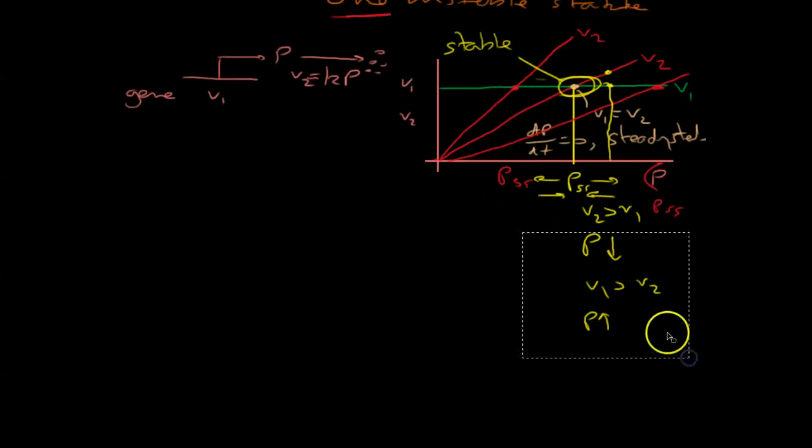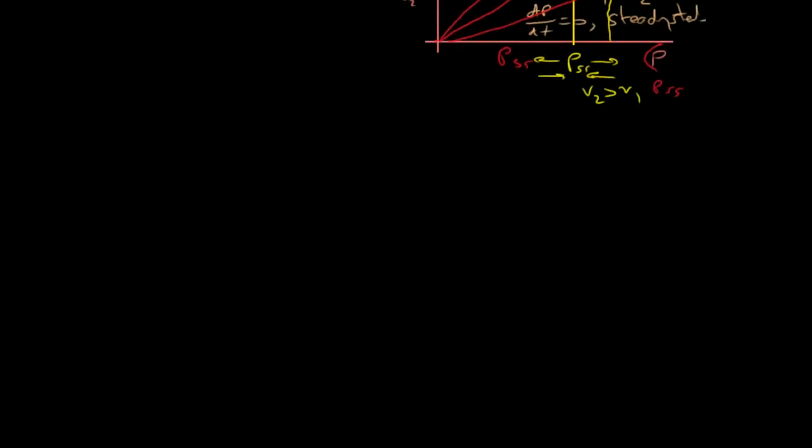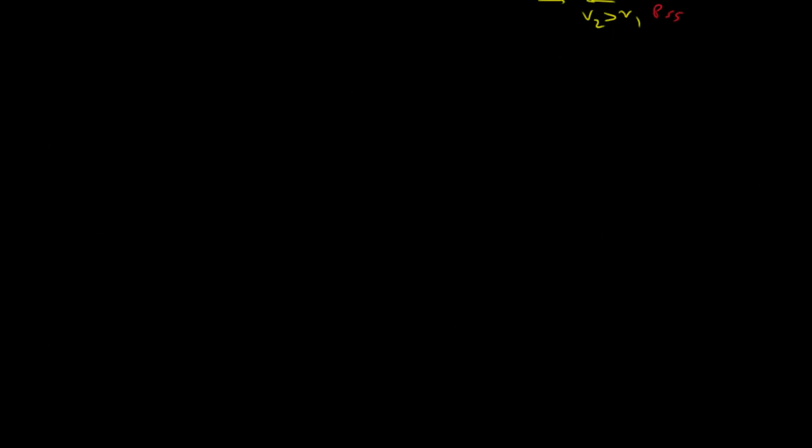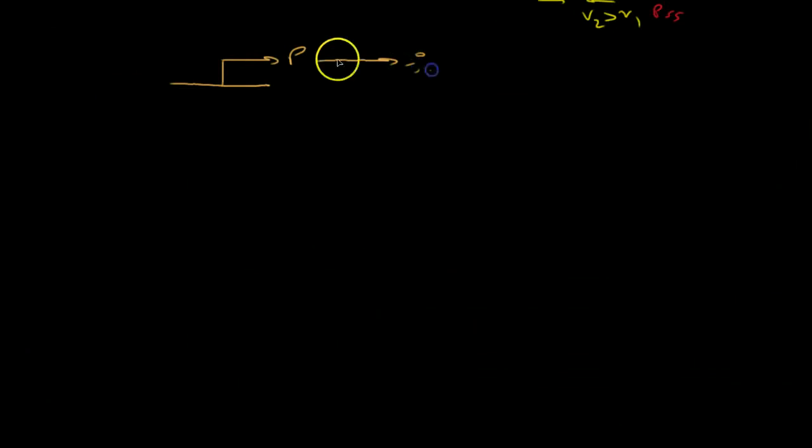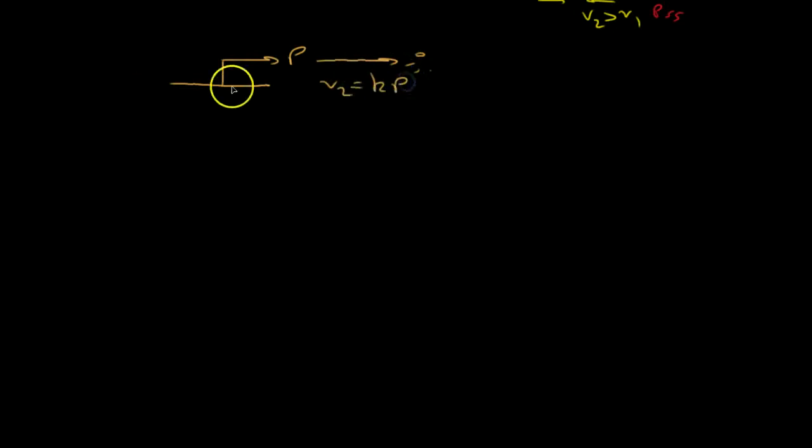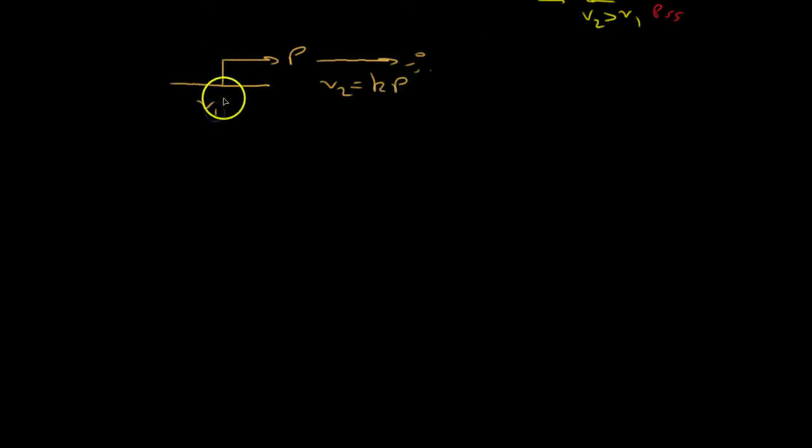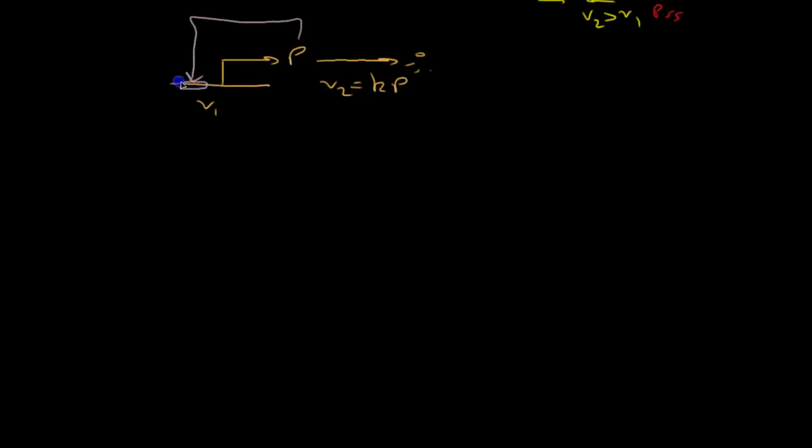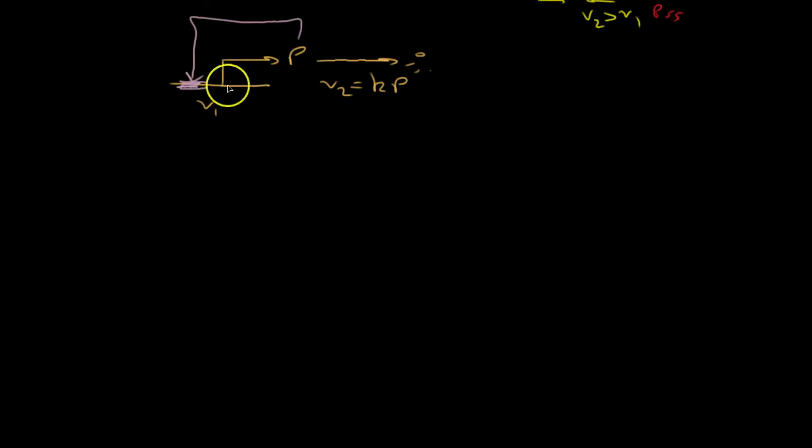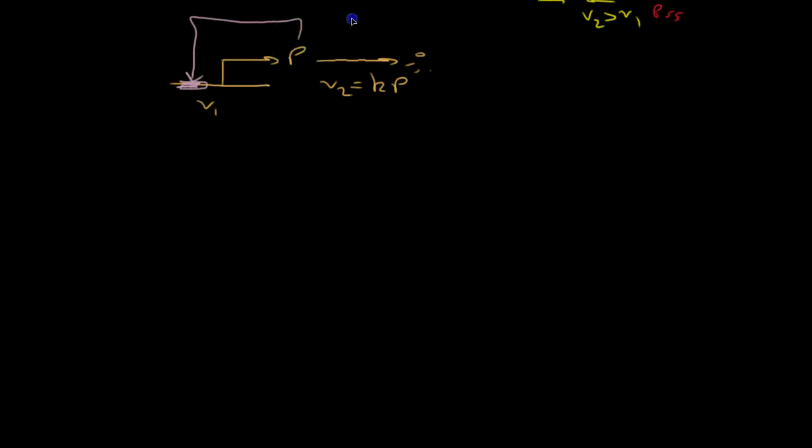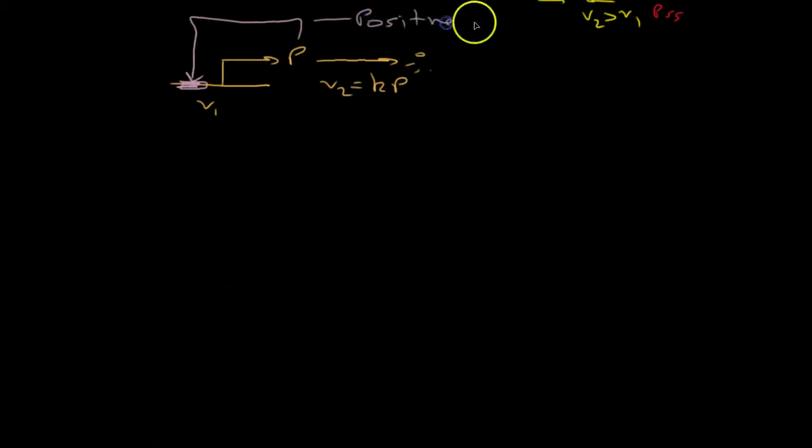So, let me just get rid of some of these. Okay, now, let's have a look at a slightly different system. Let me draw the same one as before. Gene producing P. P degrades, like that. And again, P will degrade at a rate K times P. But this time, I'm going to change the way V1 works. This time, I'm going to add an operator site onto here, upstream of the promoter, such that it activates the production of P. So, this, then, is a positive feedback.